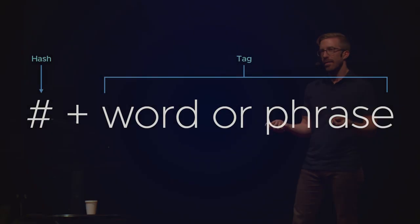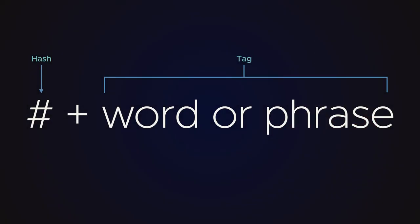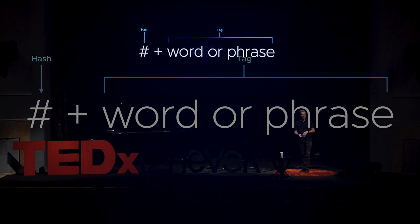I will explain what a hashtag is — it's very simple, fortunately. First, you have the hash or pound symbol. Technically, it's also known as an octothorpe, but octothorpe tag didn't sound quite as good. And then you add a word or a phrase. Importantly, the phrase doesn't have any spaces in it.